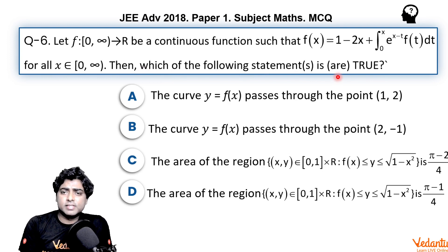Then, which of the following statements are true? More than one option can be true. Option A says the curve y = f(x) passes through (1, 2). Option B: y = f(x) passes through (2, -1). We need to first get the function f(x) properly, then we will identify which option would be correct.